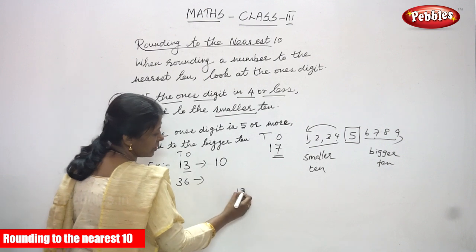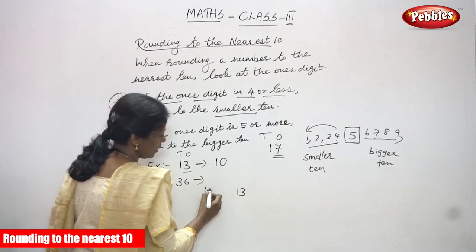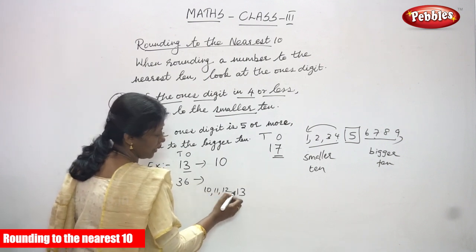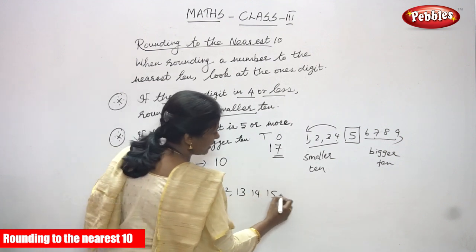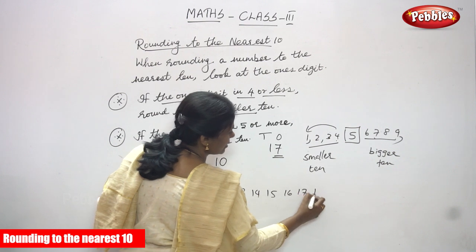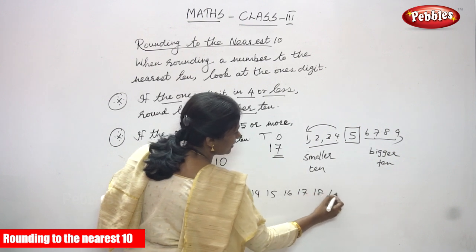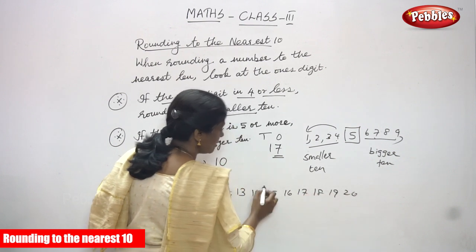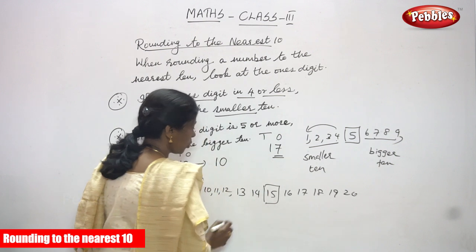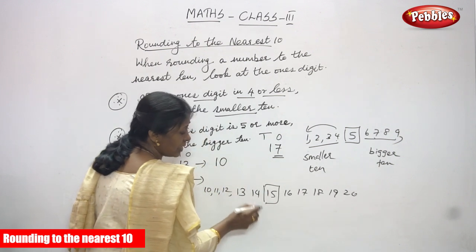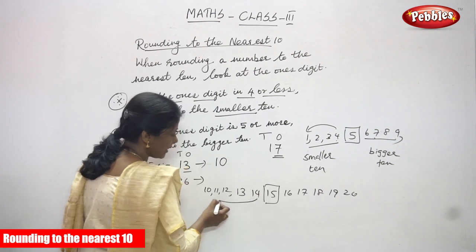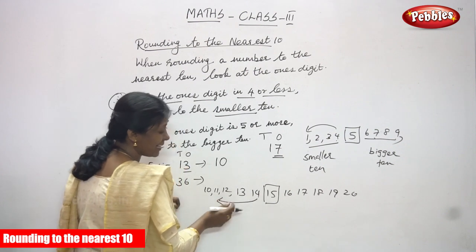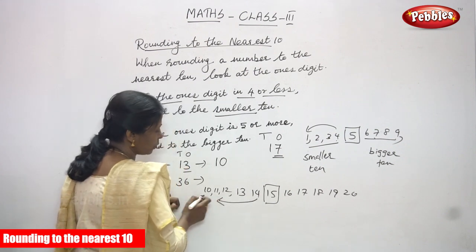Because for 13, the numbers go: 10, 11, 12, 13, 14, 15 — 15 is the middle number — then 16, 17, 18, 19, and 20. We only consider the ones digit, which is 3. So 4 or less means you round to the nearest smaller 10, which is 10.